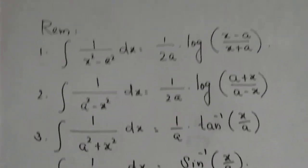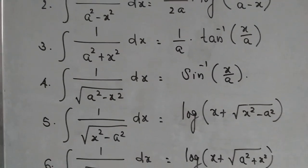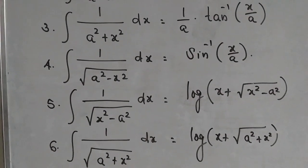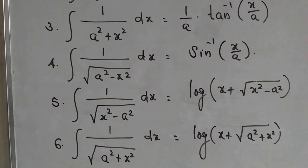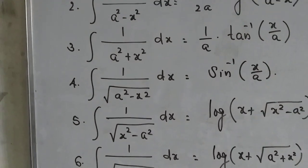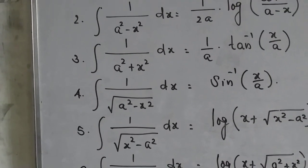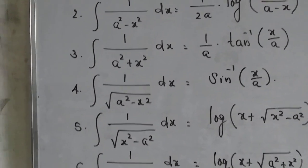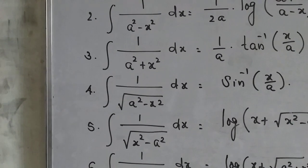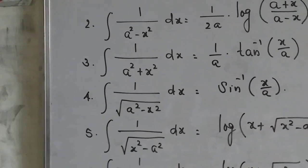Before going to the next session of questions, you need to go through these equations correctly — write them down separately in your notebook and be ready with these equations. In all these cases you can see that the numerator is unity, that is 1, in each case from one up to six.